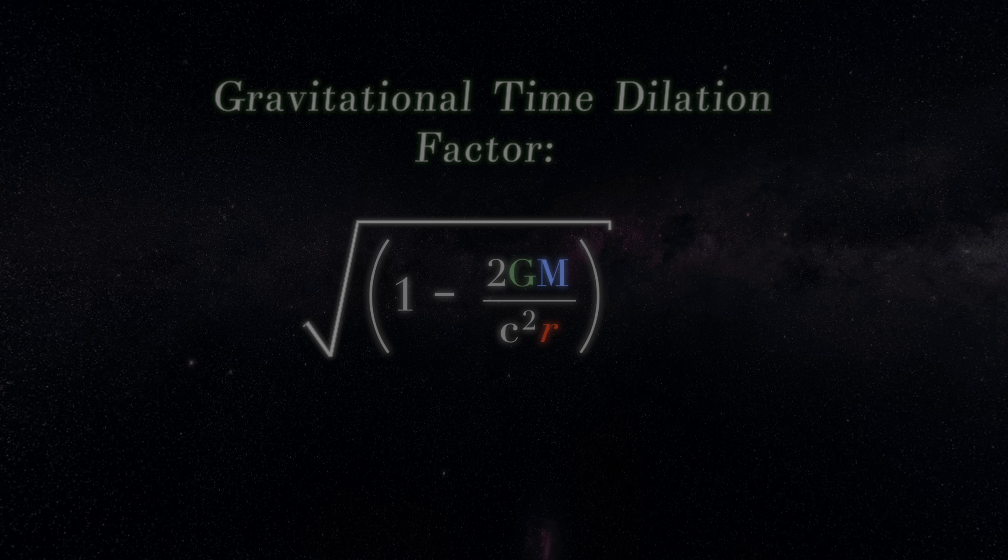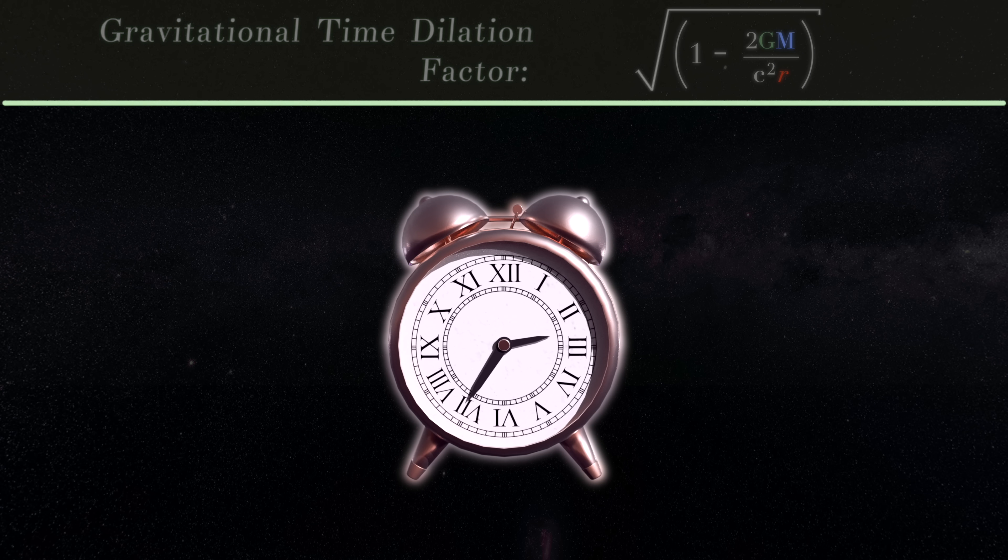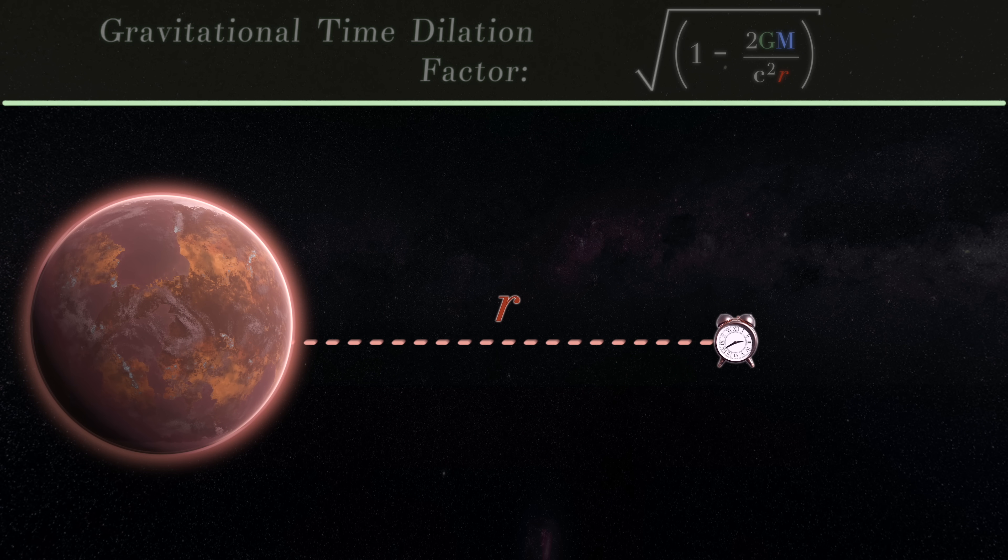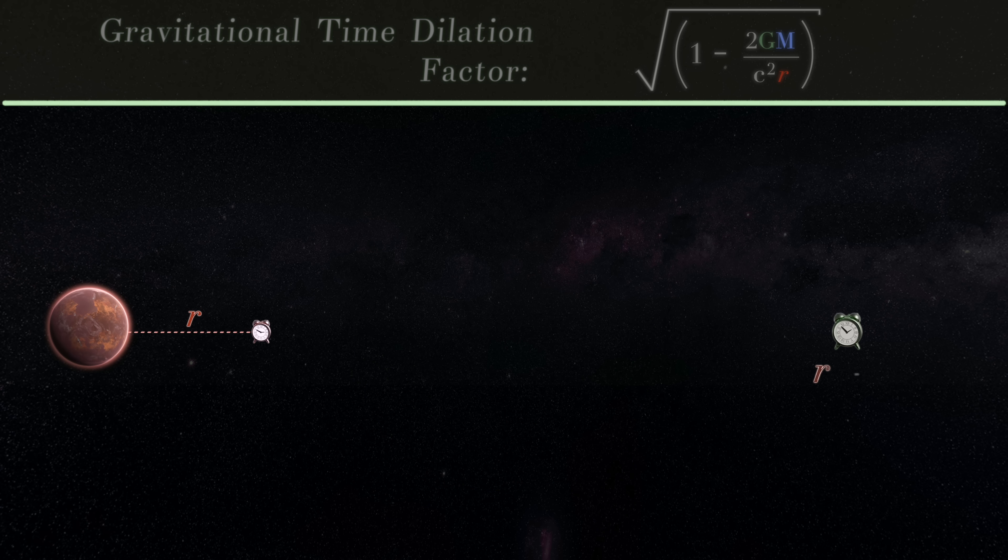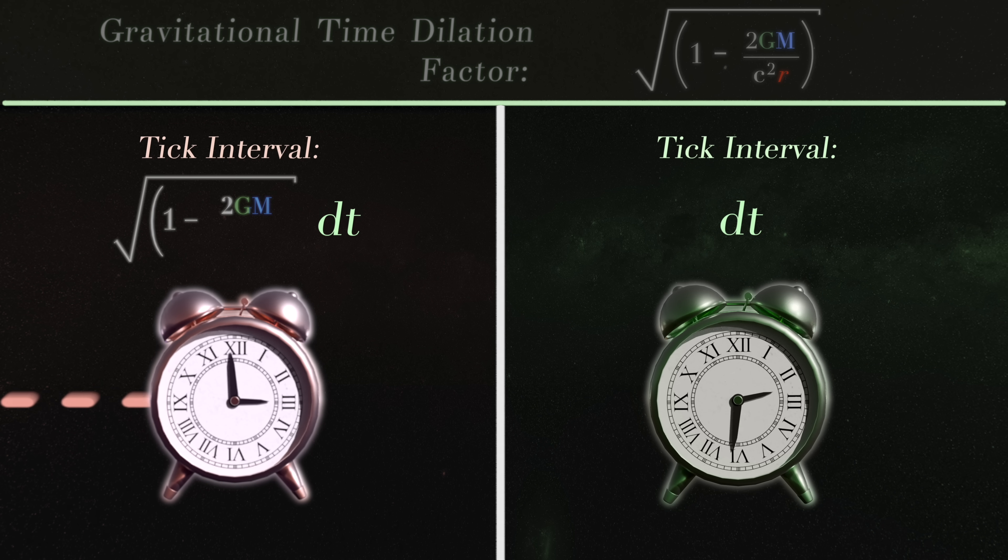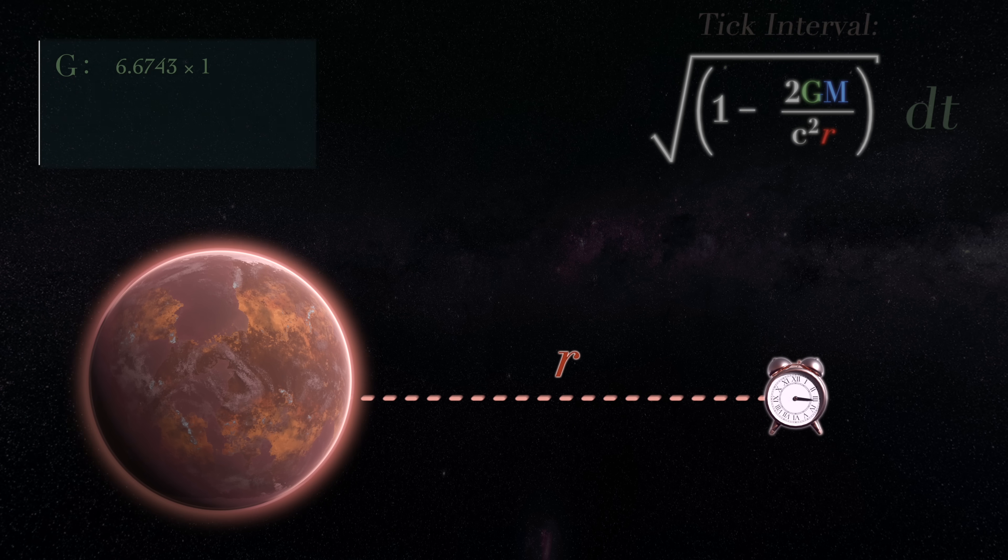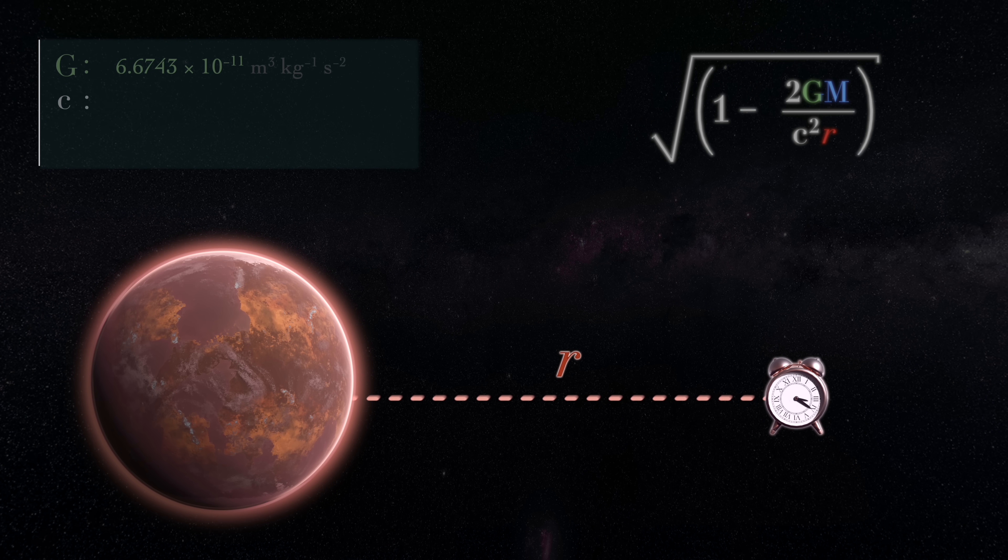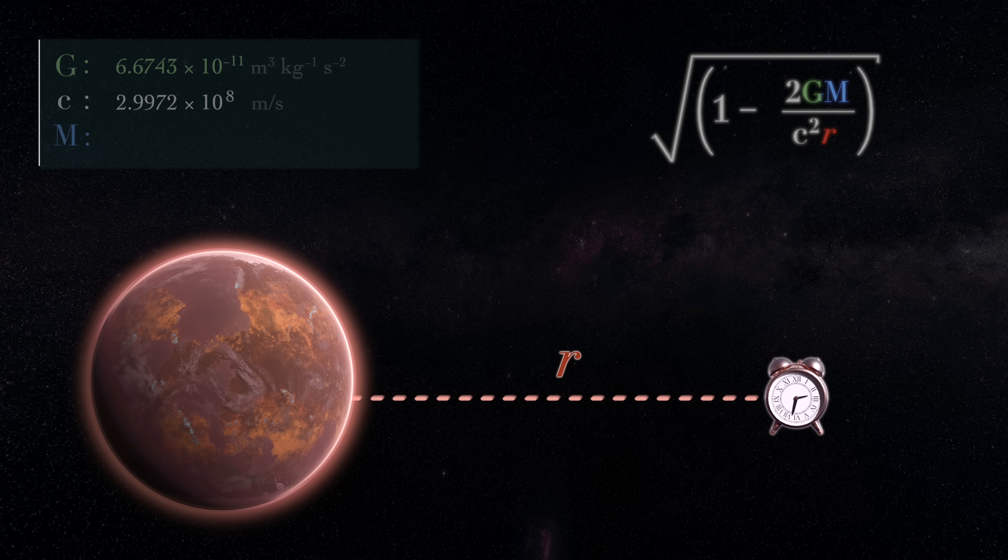That is, this expression tells us that a clock situated at a distance r out from a central mass will tick more slowly than a clock very far out in deep space, by a factor of the square root of 1-2GM over c-squared times r. Here, G is the gravitational constant, c the speed of light, and M the mass of the body, which is assumed to be uncharged and negligibly rotating.